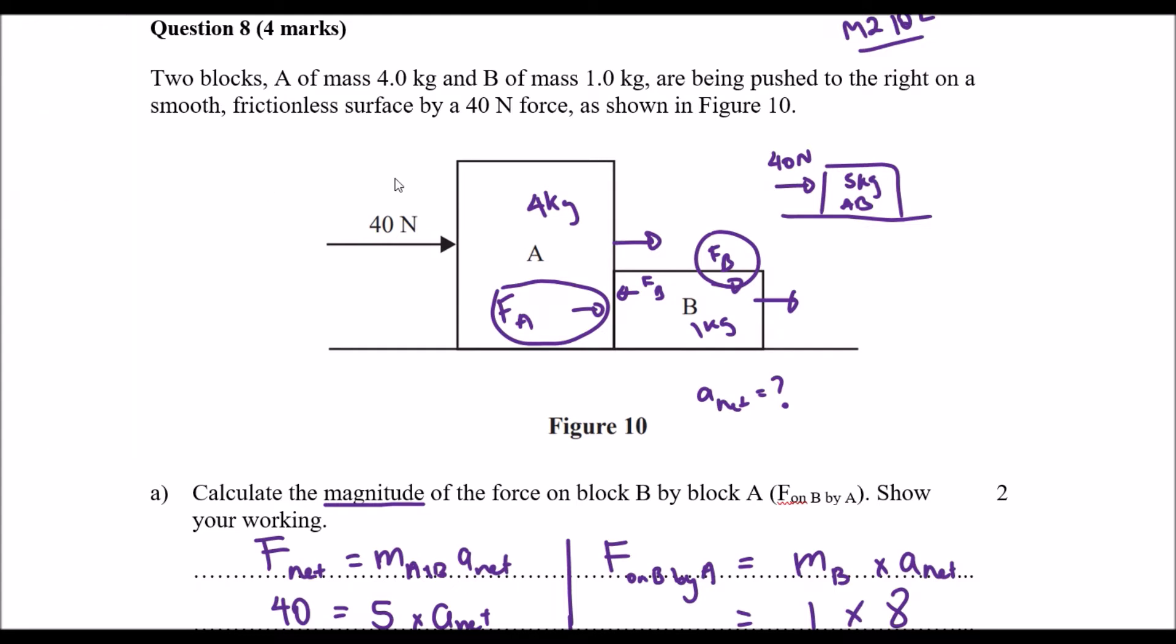So as I previously stated, on block B we are pushing it at 8 newtons of force. Okay, so that means block A is pushing it at 8 newtons of force in order to make it move at 8 newtons or in order to apply 8 newtons of force to make it have an acceleration of 8 meters per second squared. I think that's pretty clear now.